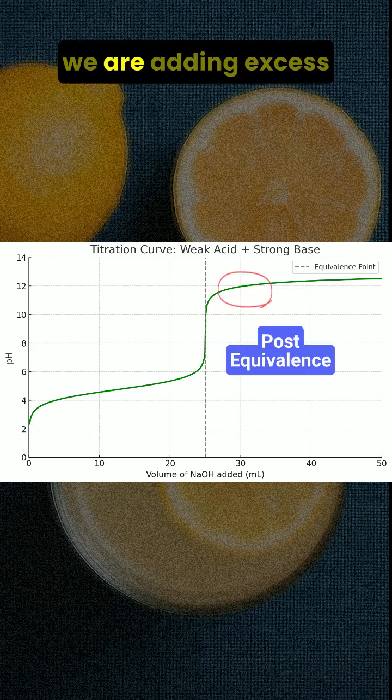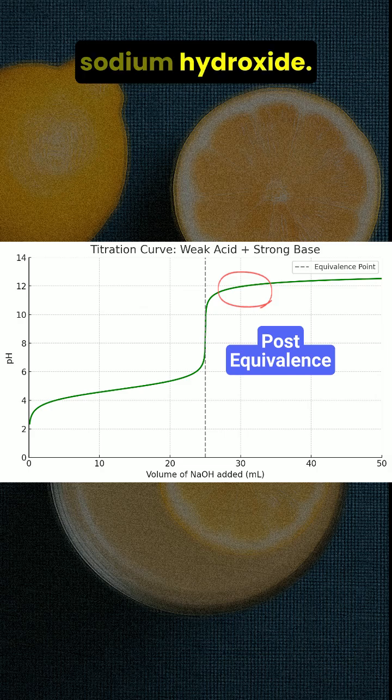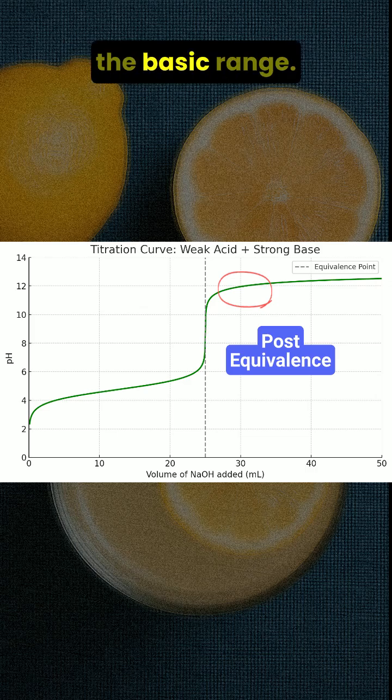Beyond the equivalence point we are adding excess sodium hydroxide. Now hydroxide ions are in excess and the pH increases sharply into the basic range.